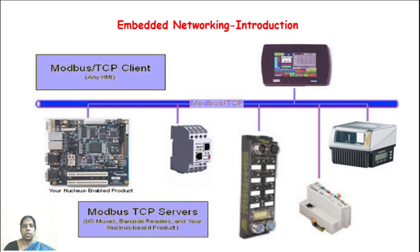Let us see the importance of a network in an embedded system. Originally the embedded system was designed to work on a single computer. However, in the current scenario the introduction of various networking options has improved the overall efficiency of the embedded system in terms of economy as well as technology. The bus network and Ethernet network are the most effective network types used in embedded systems.